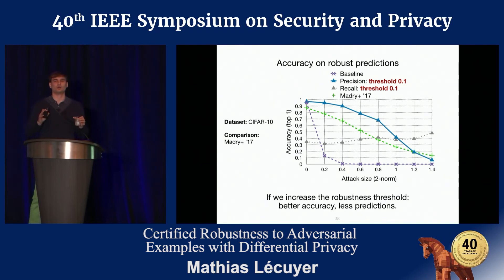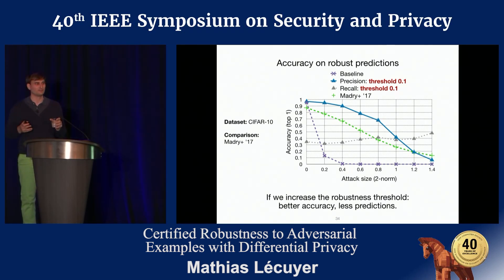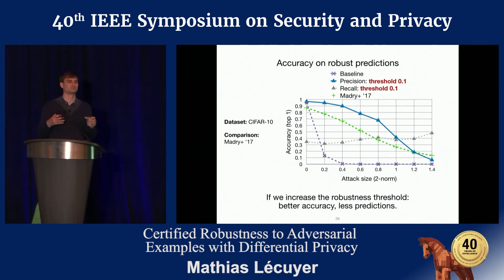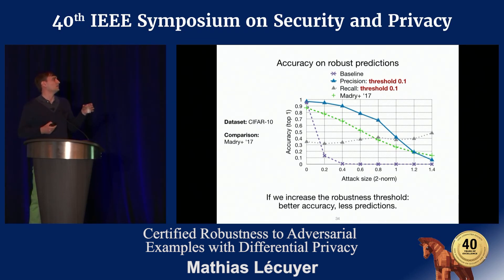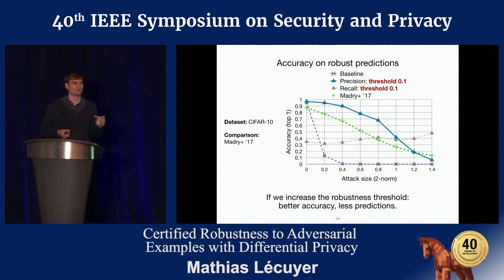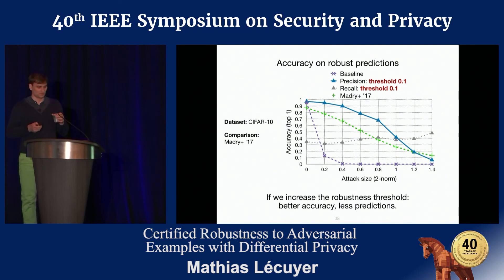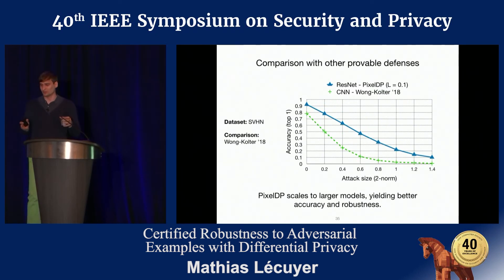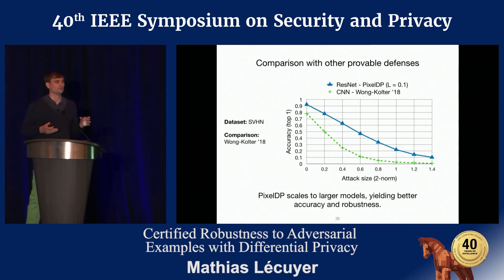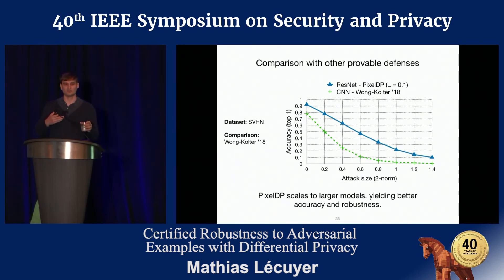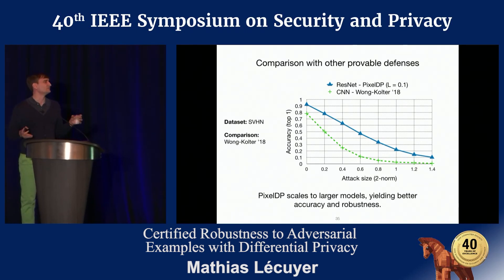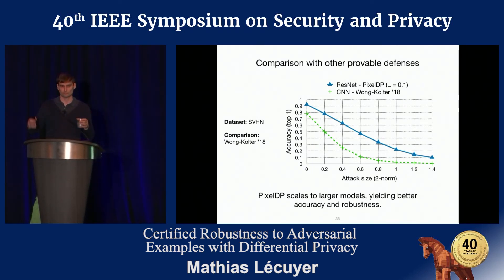By comparison, best-effort defenses that work well in practice but lack the ability to identify per-prediction robustness cannot distinguish between more and less robust predictions, and therefore get lower accuracy under attack. In a comparison with state-of-the-art robust defenses at the time, PixelDP's ability to train much larger models yields both better clean accuracy and better robust accuracy under attack.